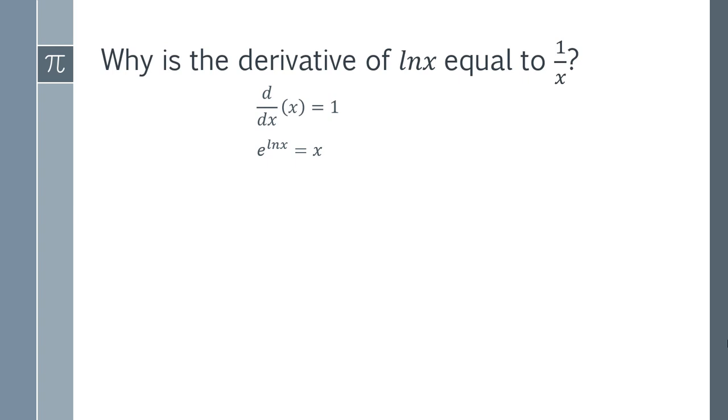So we can replace the x in our derivative with e to the ln(x) without changing the expression. So the derivative of e to the ln(x) must be 1 because of the previous two statements.